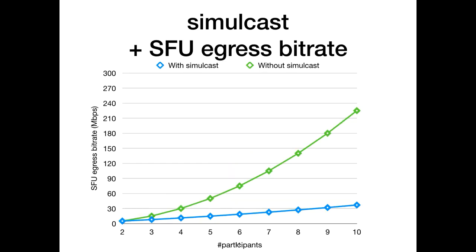In this graph, we see the egress bitrate of the bridge for a single conference as the number of participants grows — it's quadratic in the number of participants. However, when simulcast is enabled, the growth rate depends only on the low quality resolution bitrate and is much smaller. For a 10-way call, you would need 225 Mbps without simulcast and only 35 Mbps with simulcast — the difference is substantial.